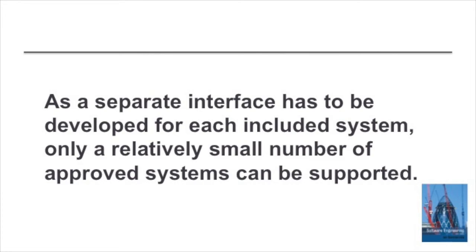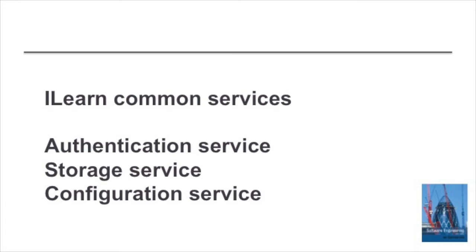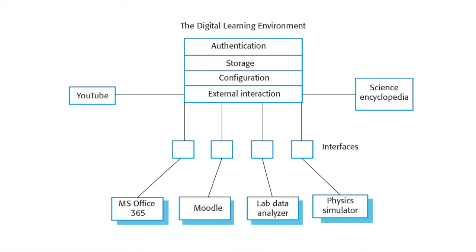This limits the number of systems we can put into the container unless these systems are developed with the container in mind. The iLearn case study — the digital learning environment I introduced in chapter one — is an example of a system of systems implemented as a container. We have a container providing a very small number of common services such as a storage service and an authentication service. Within that, we place a range of other systems that can access and make use of these services and interact through shared storage or other mechanisms. This diagram illustrates the situation for the iLearn system with the systems placed in the container and the common services offered.